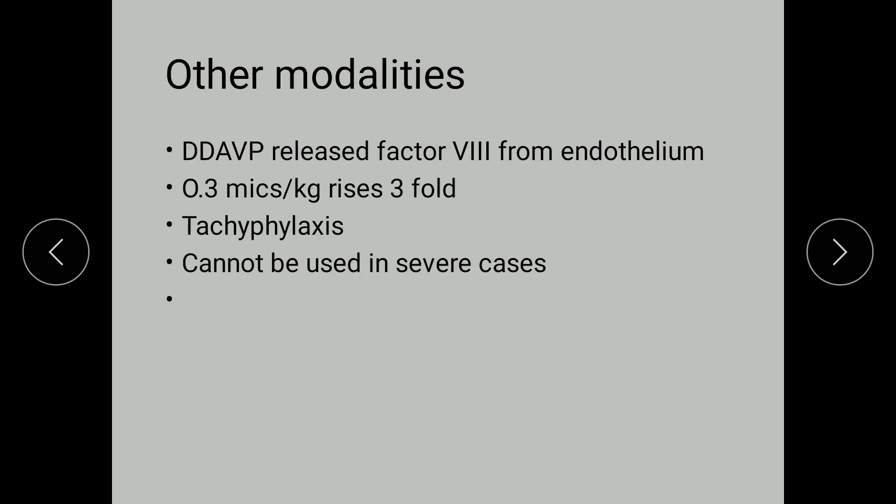Another modality of treatment is DDAVP (Desmopressin). When given by the intranasal route at a dose of 0.3 mg per kg, it can release Factor 8 stored in the endothelium, increasing its value by 3 times. The problem is tachyphylaxis — repeated use leads to diminished response because the stores become depleted. This cannot be used in severe cases since there is no Factor 8 production, so Desmopressin will have no effect.